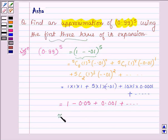Therefore adding the first and third term we have 1.001 minus 0.05, which equals 0.9510.